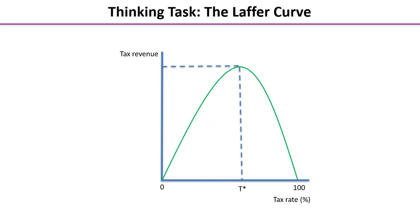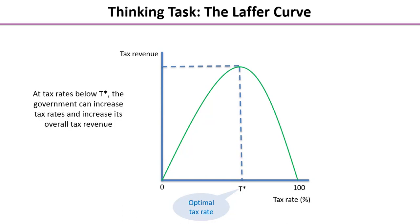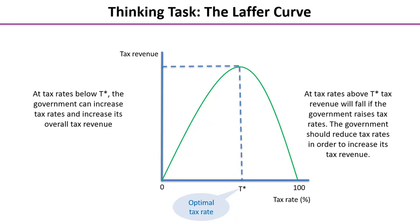That varies between countries, and there is an interactive activity as part of this online lesson you can use to explore this in more detail. The point indicated on the graph is where tax revenue peaks — that is known as the optimal tax rate, highlighted on screen as t-star. At tax rates below t-star, the government should increase tax rates if it wants to increase its overall tax revenue. At tax rates above t-star, tax revenue will fall if the government raises rates, so the government should reduce tax rates in order to increase its tax revenue.